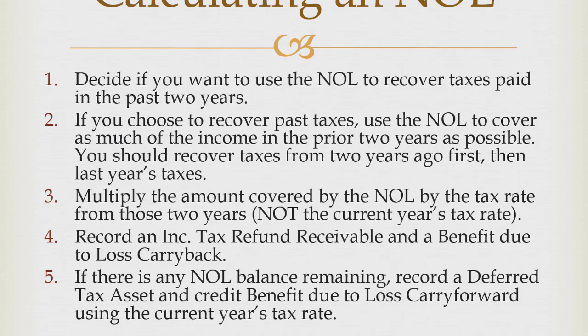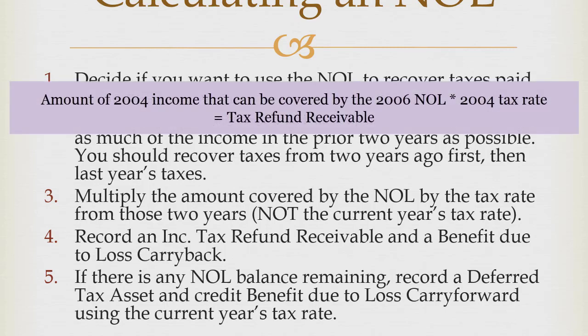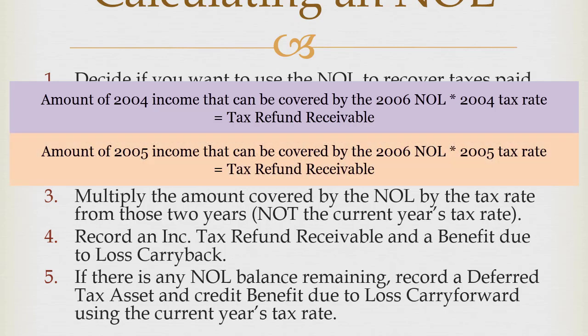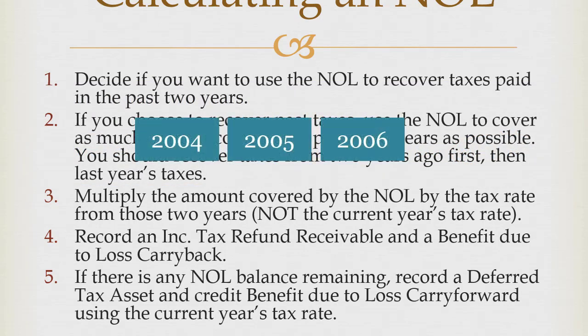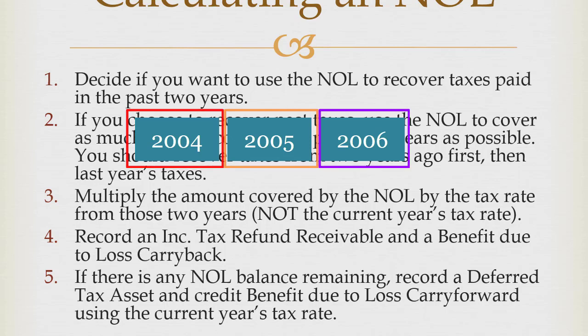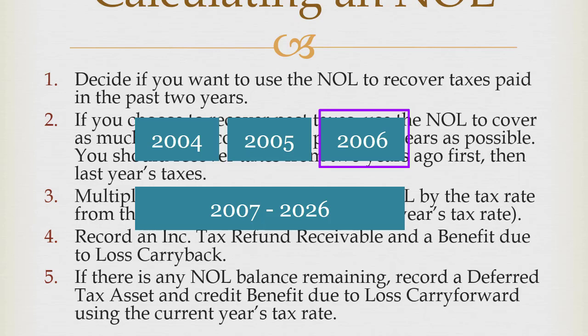Once I've decided how much of my previous income I can cover with my net operating loss, I take the amount covered from 2004 times the 2004 tax rate — because I'm getting a refund on what I actually paid, based on the rate in 2004, not the 2006 rate. If I have extra, I can go on to 2005 using the 2005 rates. If I've covered all taxable income for 2004 and 2005, then I can carry forward what's left of this NOL and use it to shield the next 20 years — from 2006 all the way to 2026.